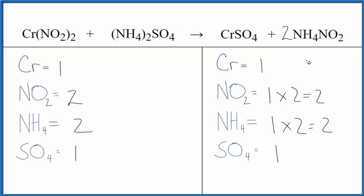We're done. This is the balanced equation for Cr(NO₂)₂ plus (NH₄)₂SO₄, chromium 2 nitrite and ammonium sulfate. The type of reaction here is double displacement. This is Dr. B and thanks for watching.